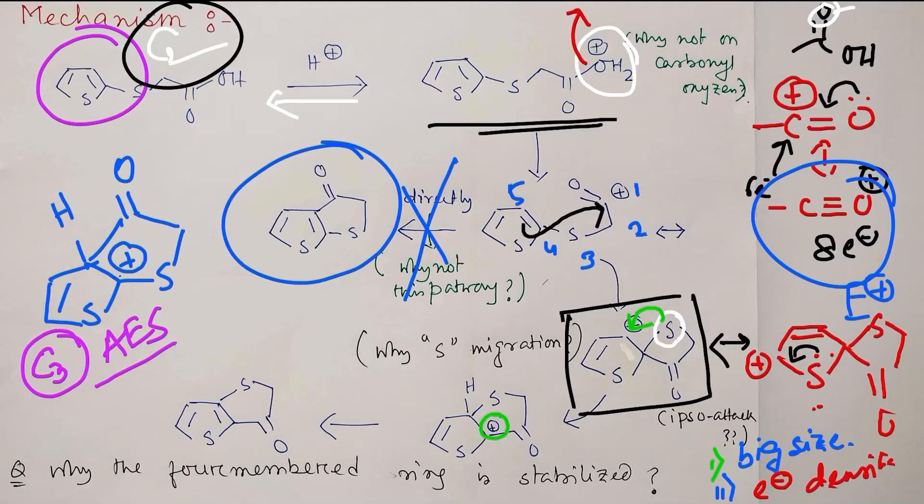Big size and relatively not that much highly electronegative. Big size and lots of electron density is available on sulfur.